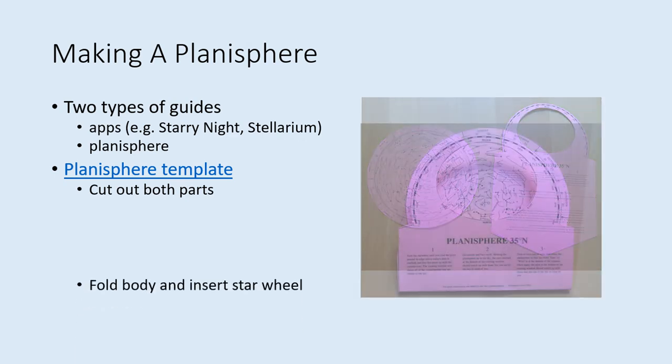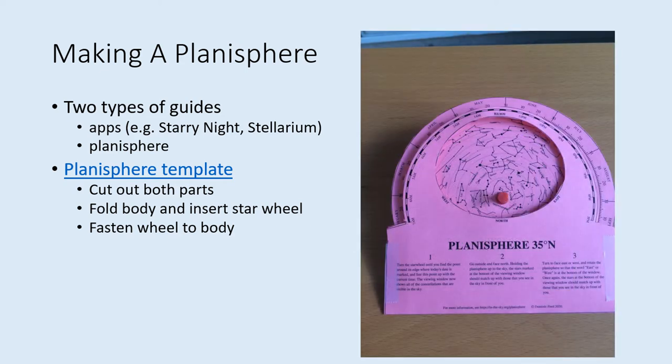Then fold the body along the line and slide the star wheel between the front and back halves, so that you can see the stars through the window in the body. The instructions suggest using a slot pin fastener to hold the pieces together, but there are other options that work as well, including a pushpin pushed into a cork. Make sure the star wheel can spin around its center point. The optional transparent overlay included in the instructions isn't needed for this lab.